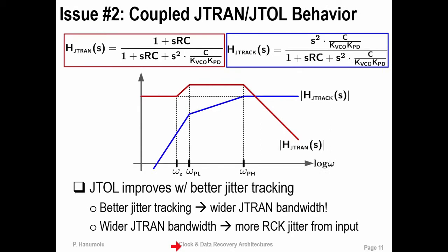The second problem is the so-called coupled behavior between jitter transfer bandwidth and jitter tolerance corner. The jitter transfer bandwidth is governed by the higher of the two-pole frequencies because the effect of the zero is canceled by a closely spaced low-frequency pole. The jitter tolerance corner frequency is also governed by the same pole frequency. For better jitter tracking, one needs to increase the jitter transfer bandwidth — increase omega_pH — but for reducing jitter transferred to the recovered clock, one has to reduce jitter transfer bandwidth. This results in the coupled jitter transfer and jitter tolerance behavior of conventional CDRs.